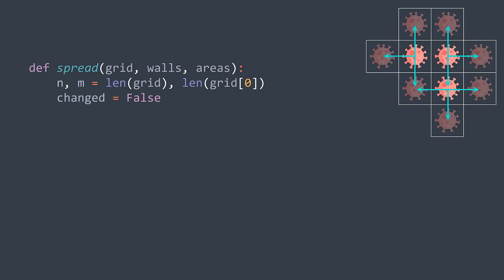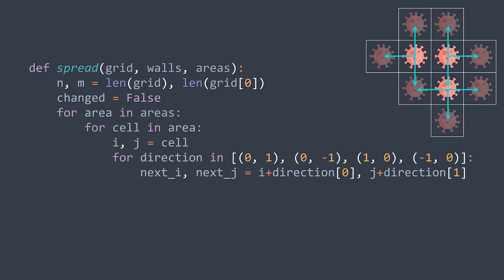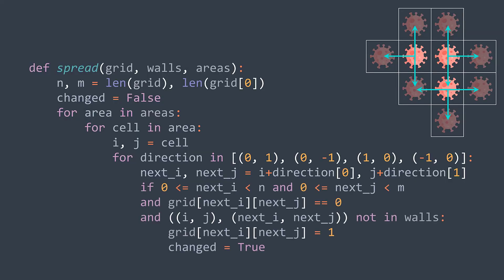Now that we've surrounded the most dangerous area, we simulate the spread. An infected cell infects adjacent uninfected cells if there is no wall. For each infected area, for each cell, we traverse the four directions. If an adjacent cell is not out of the grid, is uninfected, and there is no wall between them, it gets infected — we set its value to one and set changed to true. After spreading, we return changed.